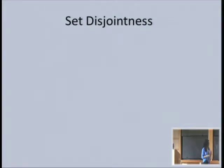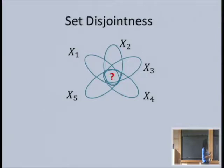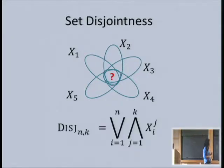Here's set disjointness. Every player's input is interpreted as a set, and the question is: is the intersection of all these sets empty or not? We can represent this as the OR over the coordinates, and inside we take the AND over all players of their bits—looking for one coordinate where everybody got a one.